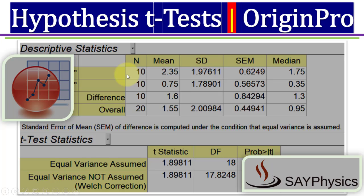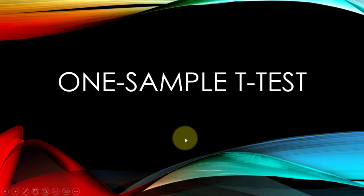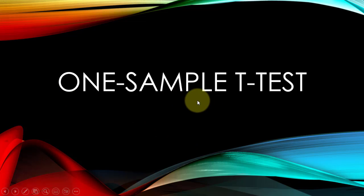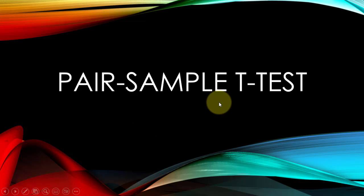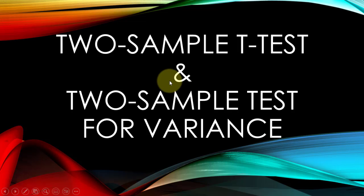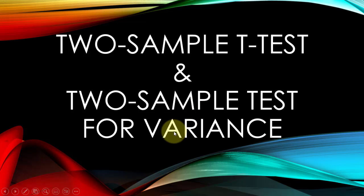In this video, we will discuss how to carry out hypothesis tests or t-tests in Origin. The hypothesis tests include one sample t-test, pair sample t-test, two sample t-test, and two sample test for variance.